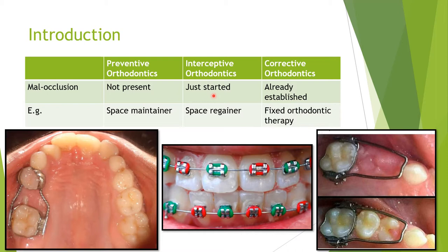Interceptive orthodontics is where the malocclusion has just begun, and we intercept and correct it as soon as possible. In the same example, if the space maintainer was not placed, the molars would have drifted mesially, blocking the space. If the patient then presents with mesially drifted molars causing space discrepancy, we use a space regainer — a device with an open coil spring — to push the molars distally so the premolar can erupt in its proper place. This intervention in developing malocclusion is the domain of interceptive orthodontics.